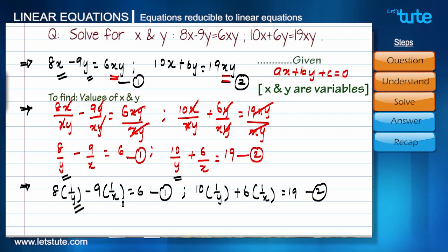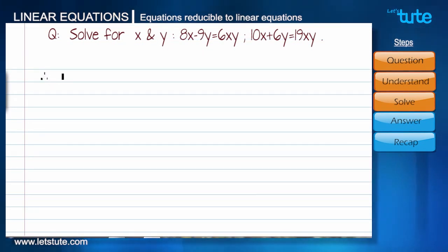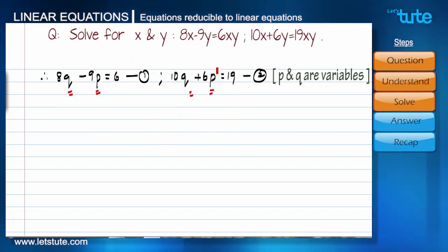As we learnt, we have to substitute for 1 by y and 1 by x in both the equations. Let's put 1 by x equals p and 1 by y equals q in both the equations. Therefore, equations will become 8q minus 9p equals 6. This is equation number 1, and equation number 2 is 10q plus 6p equals 19. These two are linear equations since we are having two variables and their powers are 1.